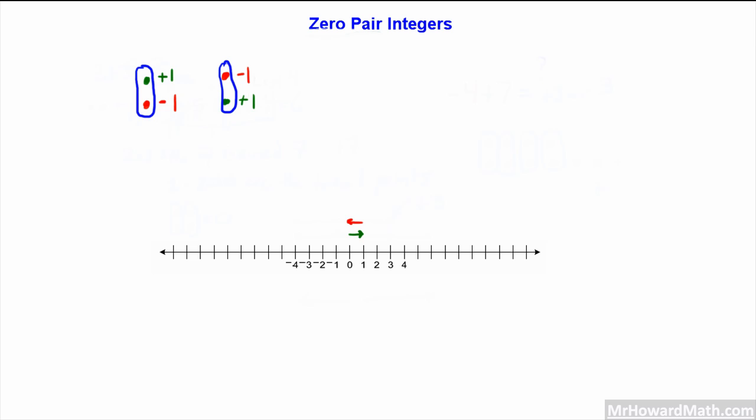So let's model that. In this case, we are starting at 0, going in the negative direction one time first. Then from negative 1, we go in the positive direction one, and we're back at 0. So the order doesn't matter. Either way, this is a zero pair.